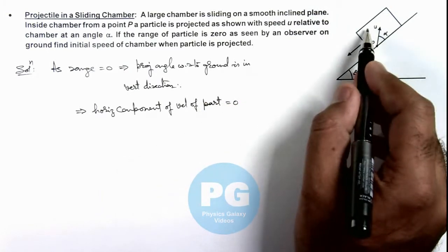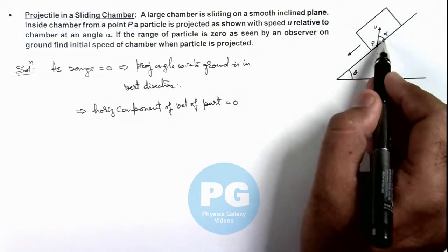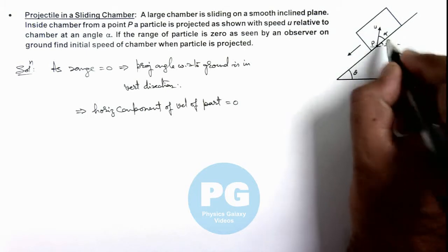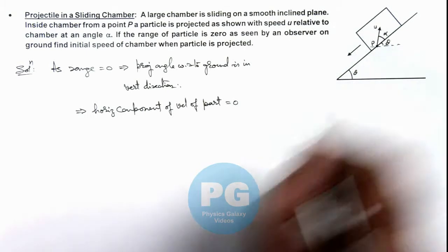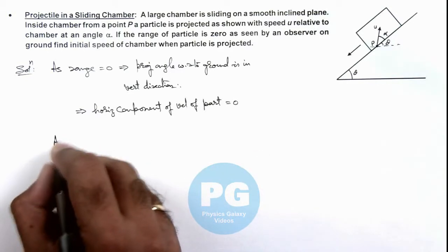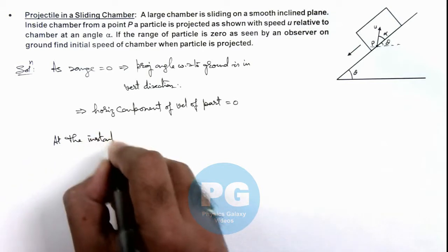As we are given that with respect to this chamber, the particle is projected at a speed u at an angle alpha. So in horizontal direction we can see if this angle is theta, its horizontal component is u cos(theta + alpha). So we can say at the instant of projection,